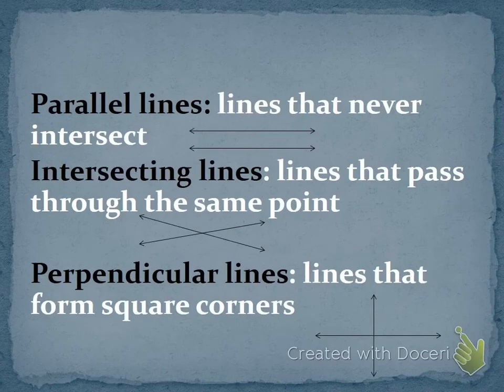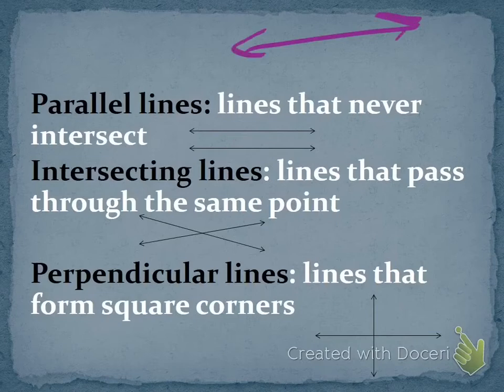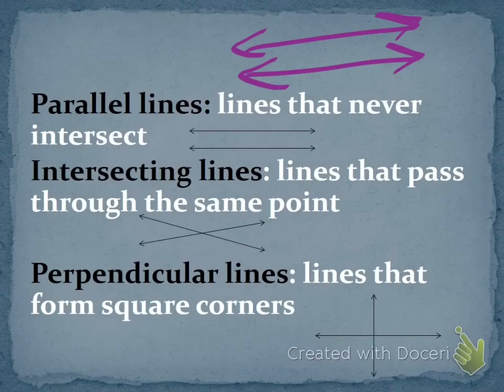The next vocabulary word today is parallel lines - lines that never intersect. They always run parallel to each other, meaning that they are right next to each other and they will never cross each other because they are running next to each other.